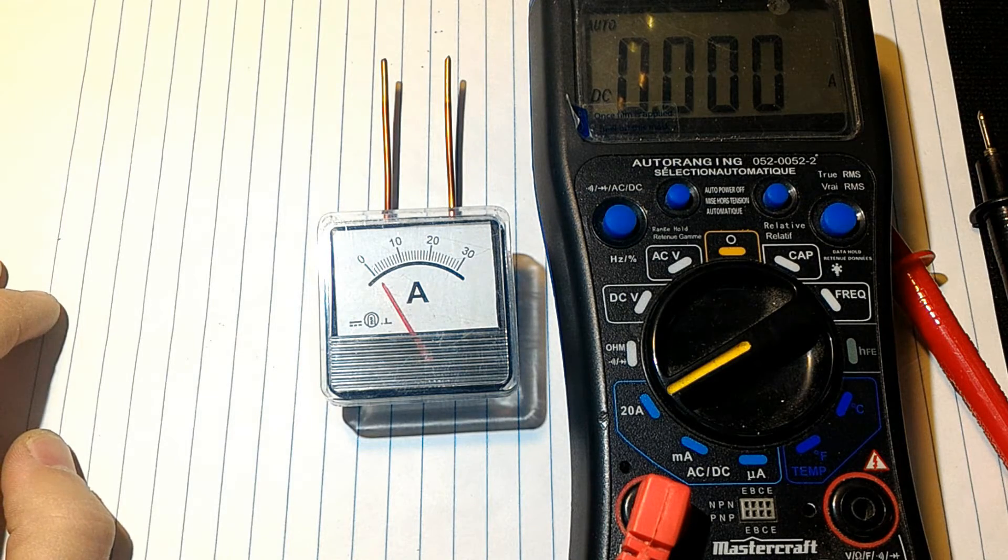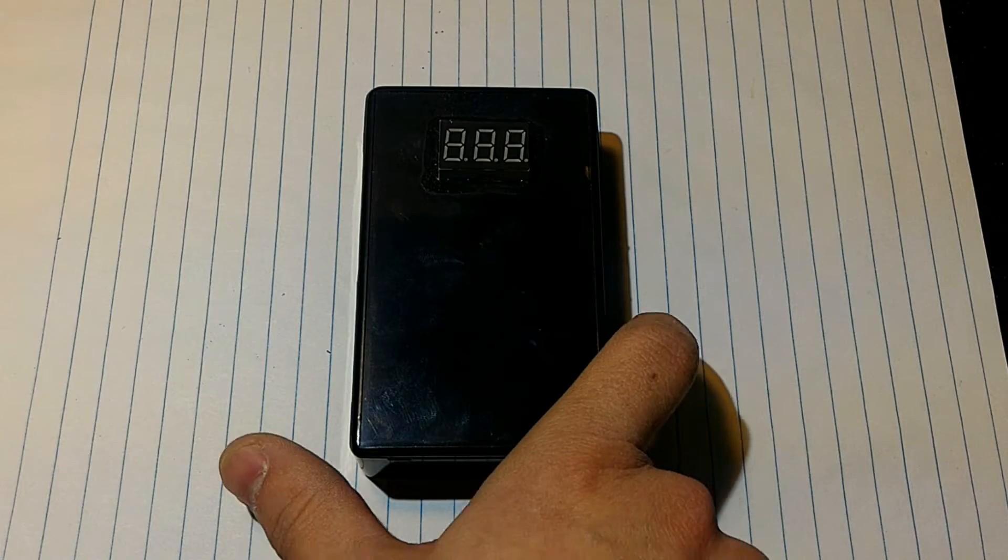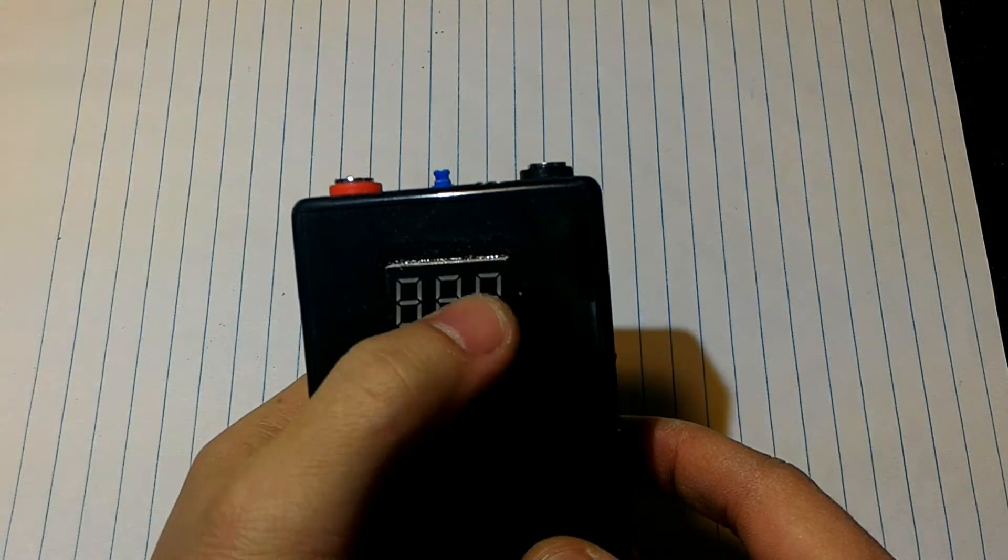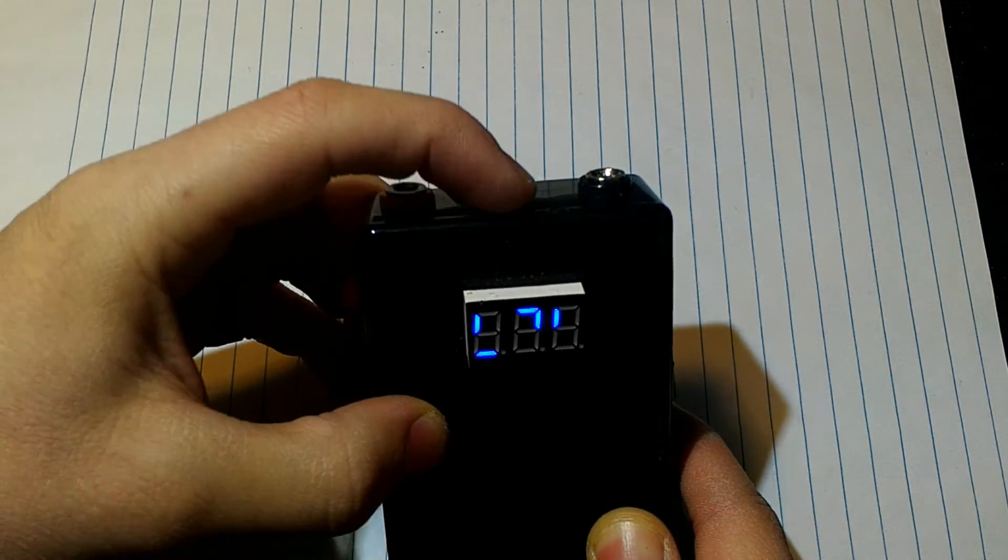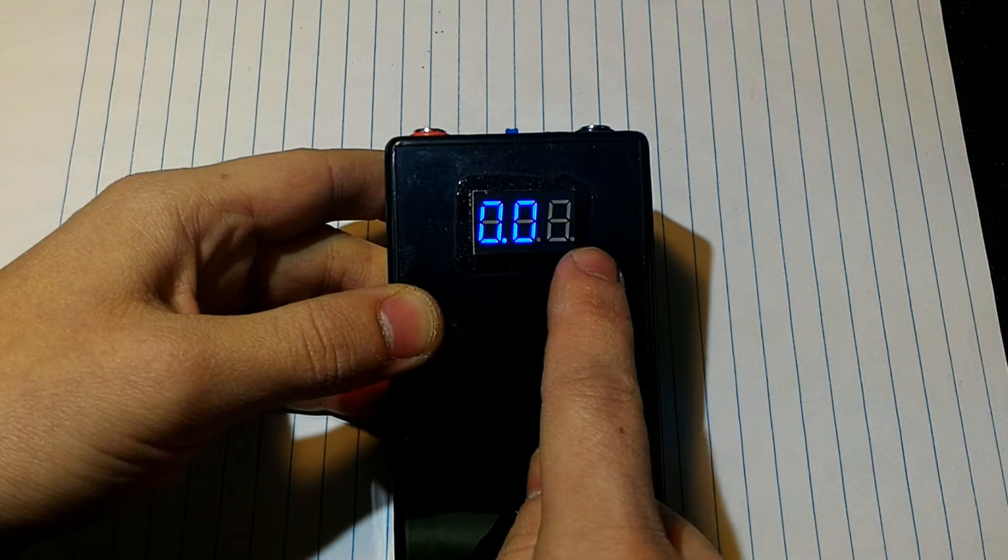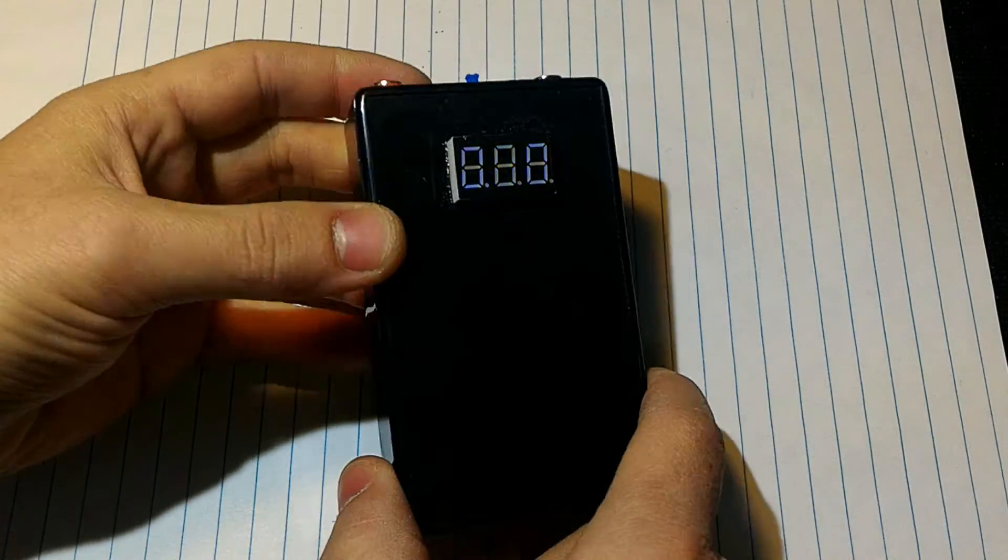As you can see, this is the current meter I made. Really simple, just a simple project box with battery inside and our screen right here. We have a positive terminal and a negative terminal and a switch. In real life the screen does not flicker, it's only on camera.